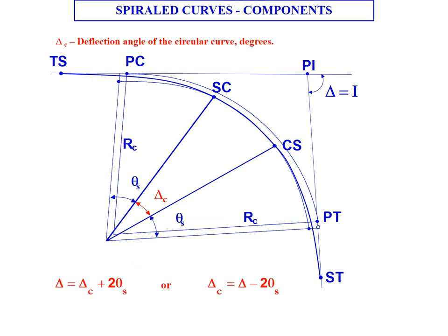The overall deflection angle delta is equal to delta sub c plus 2 times theta sub s or if you need to calculate the delta sub c, that's equal to your overall deflection minus 2 times theta sub s.